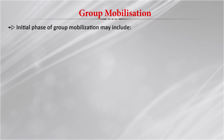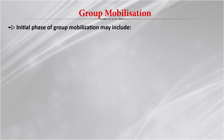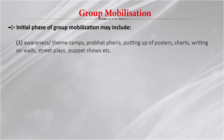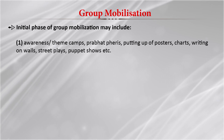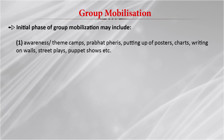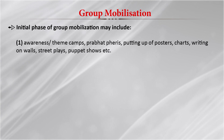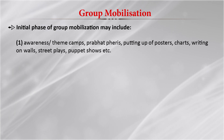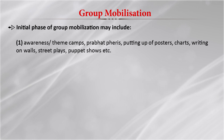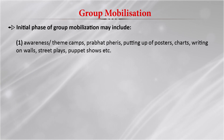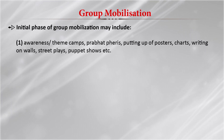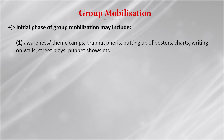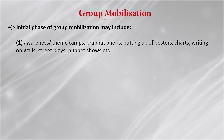Why is group mobilization important in the formation of SHG? The initial phase of group mobilization usually includes awareness and theme camps. Then it has Prabhat Fairies — Prabhat means morning and fairies means going around. In Prabhat Fairies, people go together and keep announcing, telling people from door to door about specific issues, placing posters, charts, writing on walls, carrying out street plays, and puppet shows with certain themes.